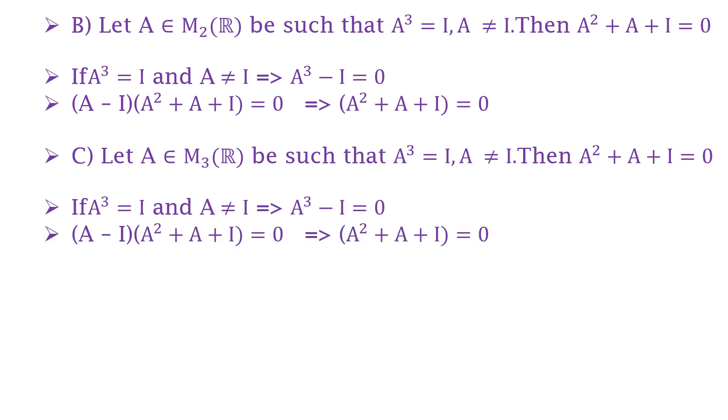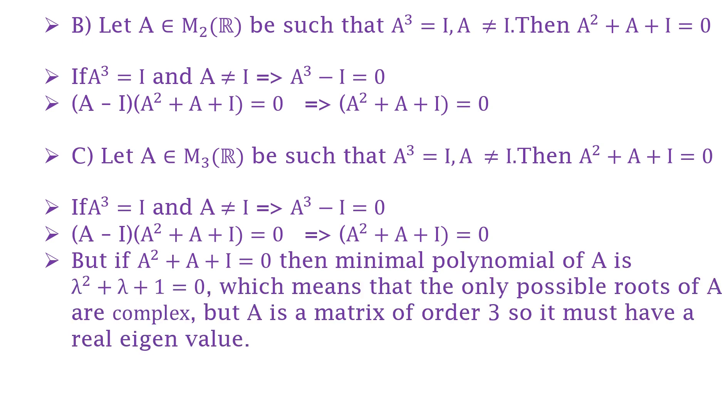Now similarly to option B, if these conditions hold true, it is correct. But again, if A² + A + I = 0, then the minimal polynomial of A is λ² + λ + 1 = 0.